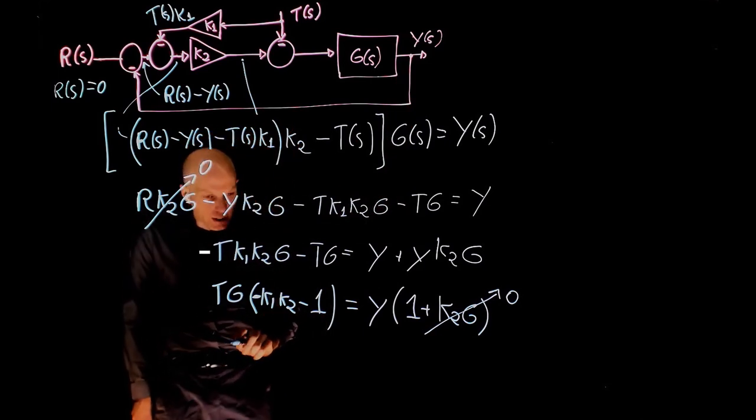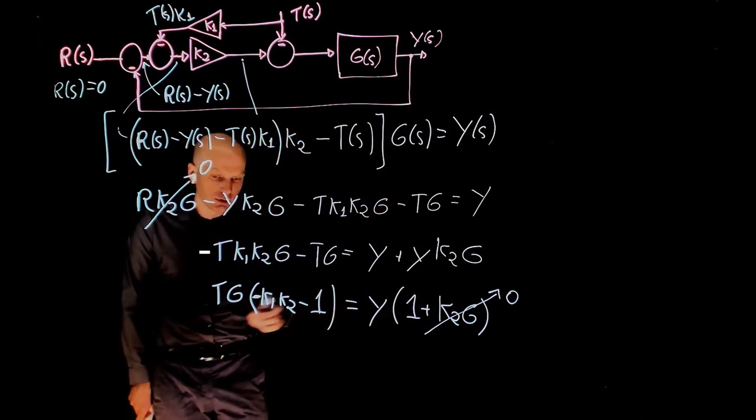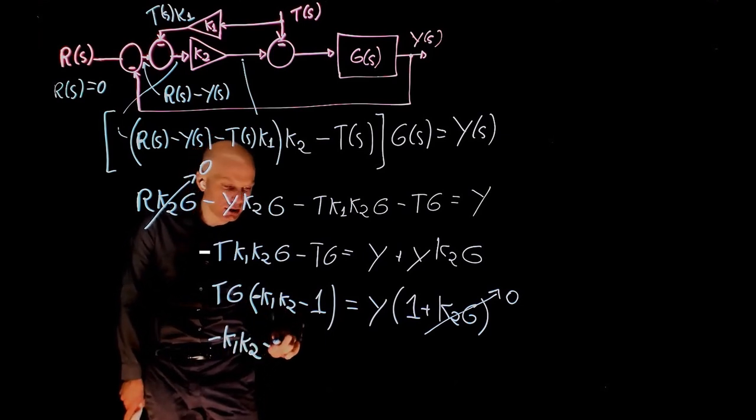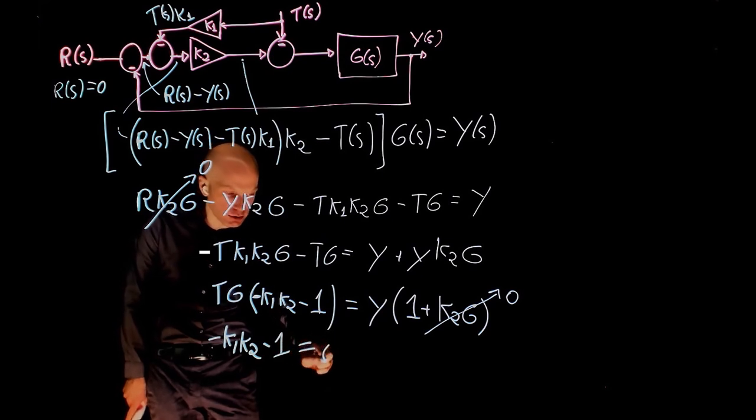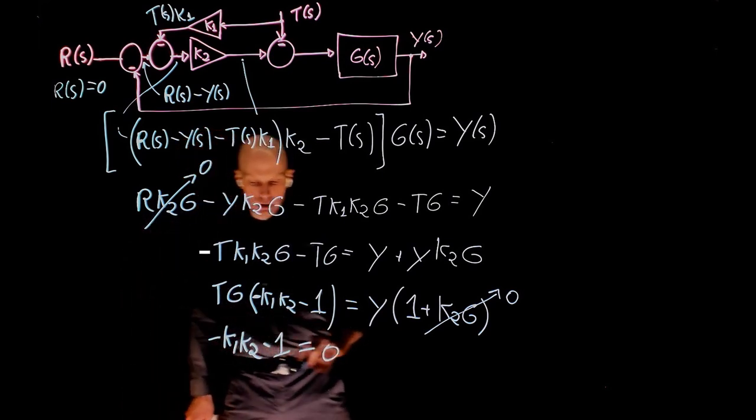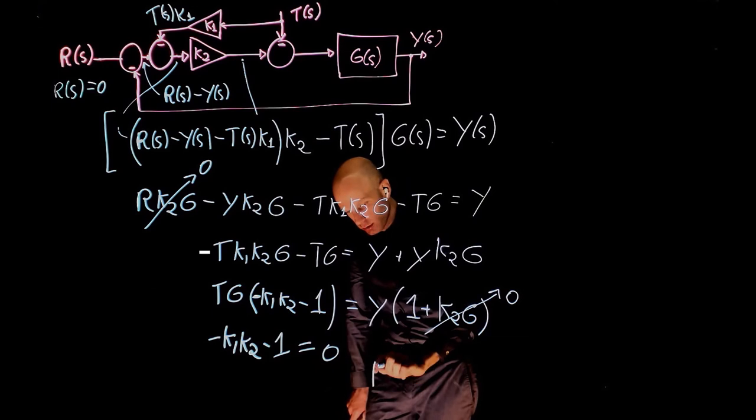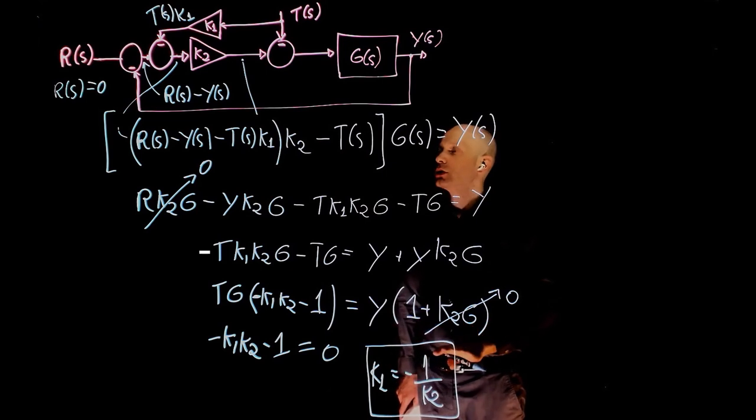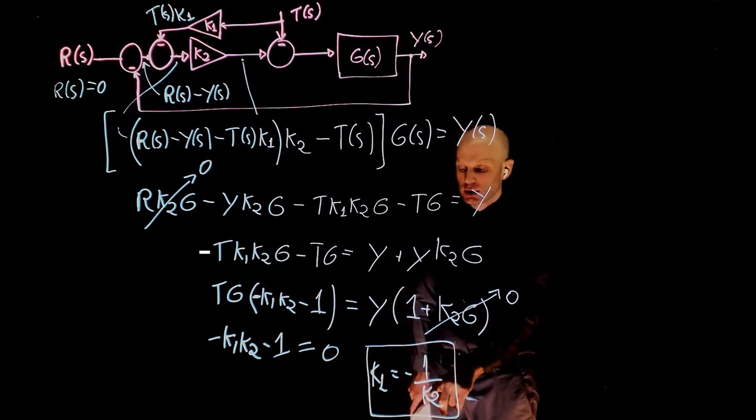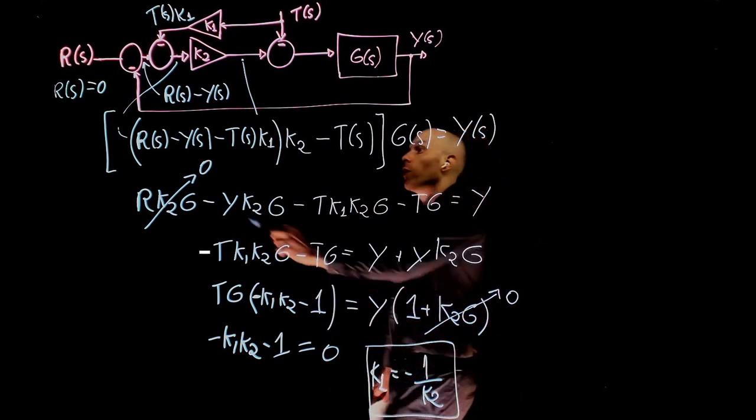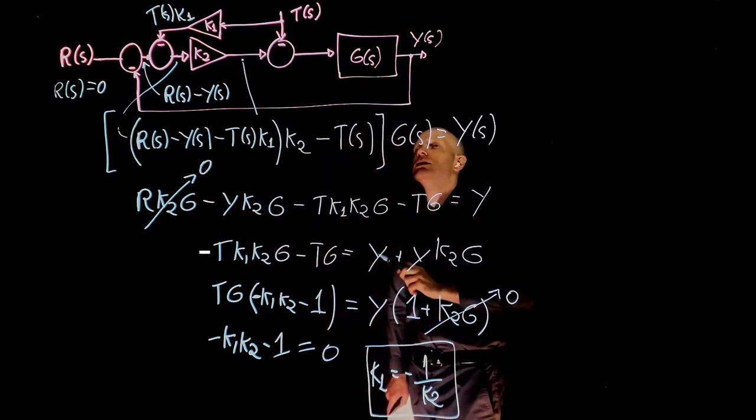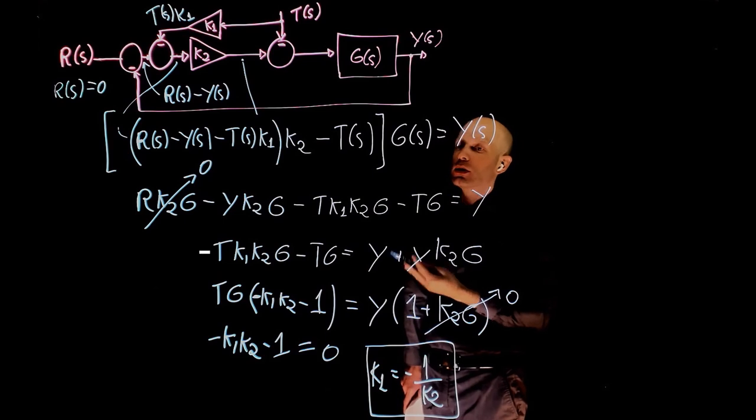So from here we get if this side is zero, zero divided by T times G is zero. So negative K1 times K2 minus 1 equals zero. Isolating for K1 gives K1 equals negative 1 over K2. So if you now tune the control system properly and set K1 to negative 1 over K2, when the desired input is set to zero, that guarantees that y the output also goes to zero.